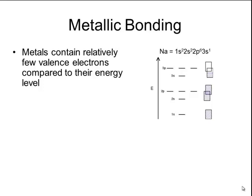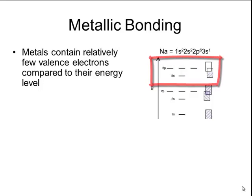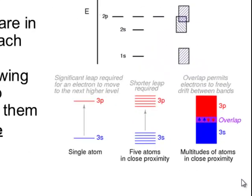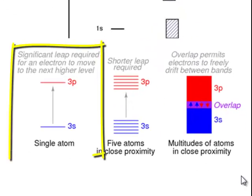For example, the electron configuration for sodium ends in 3s1, but there are actually four different orbitals at that energy level. When you only have one sodium atom, there is a significant difference in the energy level between the 3s and the 3p orbitals.